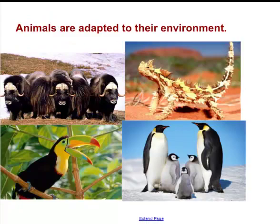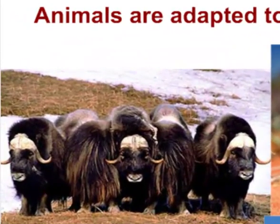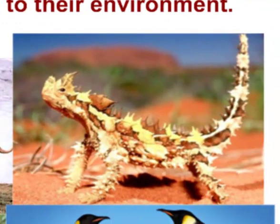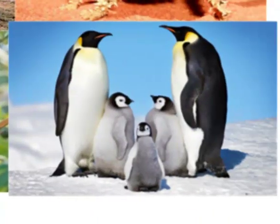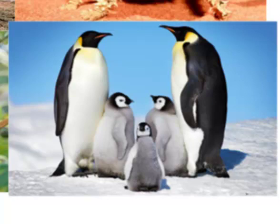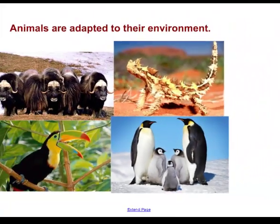Animals are adapted to climate as well. Here we see the muskox adapted to a cold northern climate, and the thorny devil found in central Australia. We have tropical birds like the toucan and Antarctic birds like the penguin. Animals are definitely adapted to their particular climate, and that tells us the climate has been like that for a very long time — allowing these animals to go through biological evolution and adapt to that area.